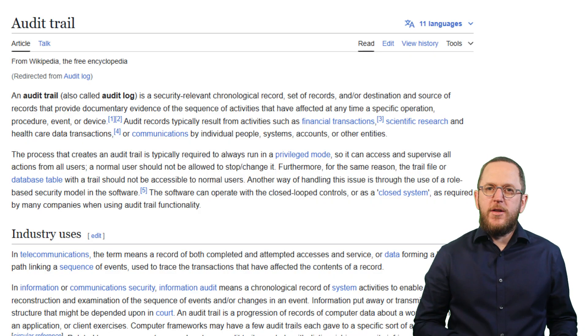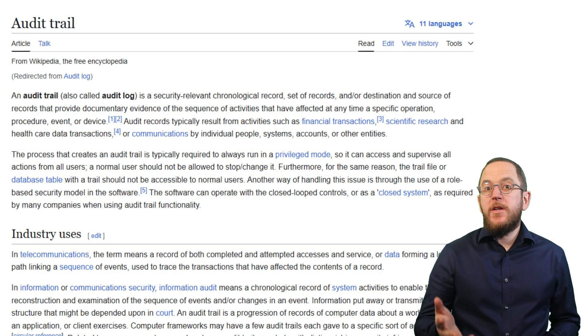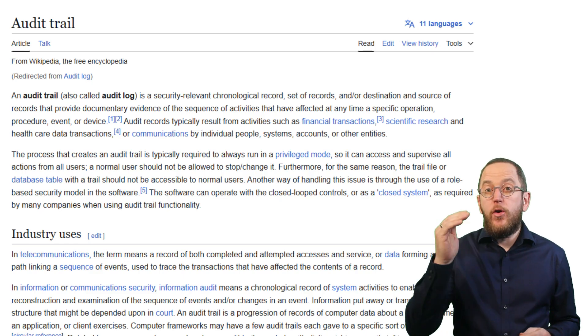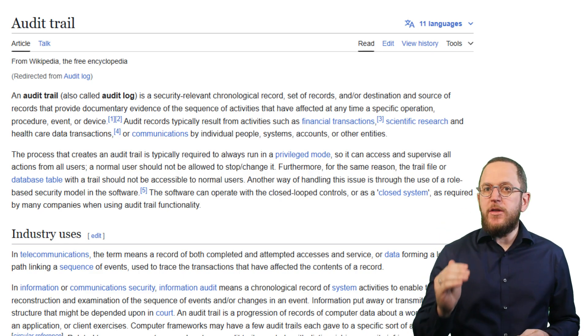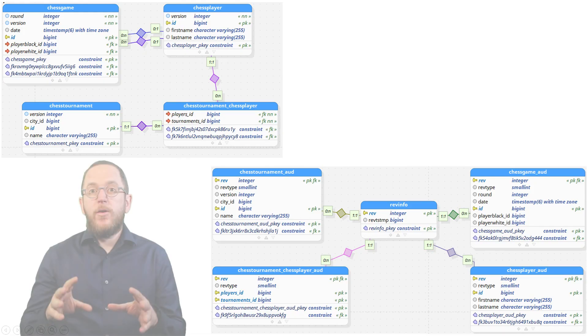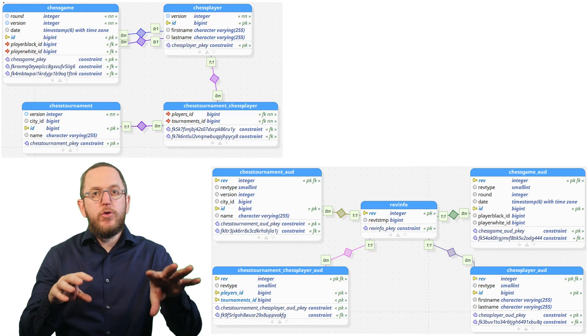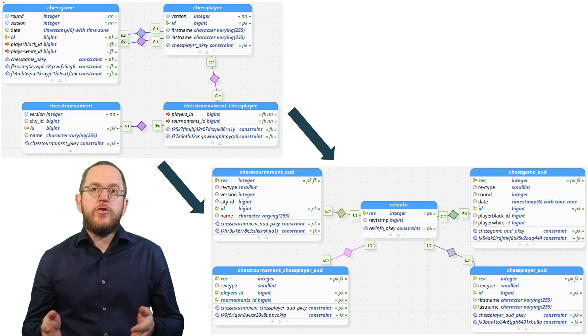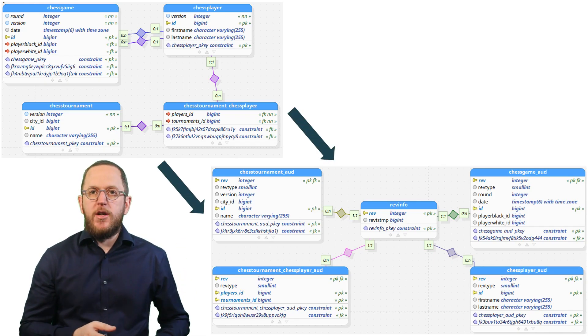So what is an audit log? If you ask Wikipedia, you get this definition. The short version is that an audit log keeps track of all the actions performed on the data being audited. In the context of a relational database, this log is usually stored in a separate set of database tables that maintain a copy of every version of each audited database record.